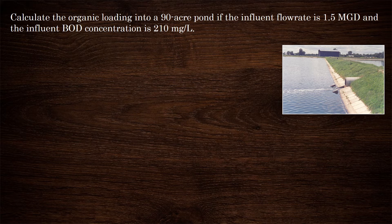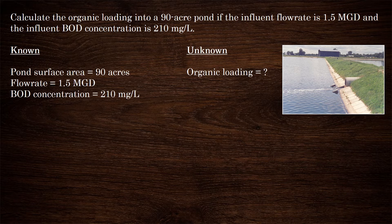First, write down all the knowns and the unknown. They give us the pond surface area, the flow rate, and the BOD concentration. And for the unknown, they're asking for the organic loading going into this pond.